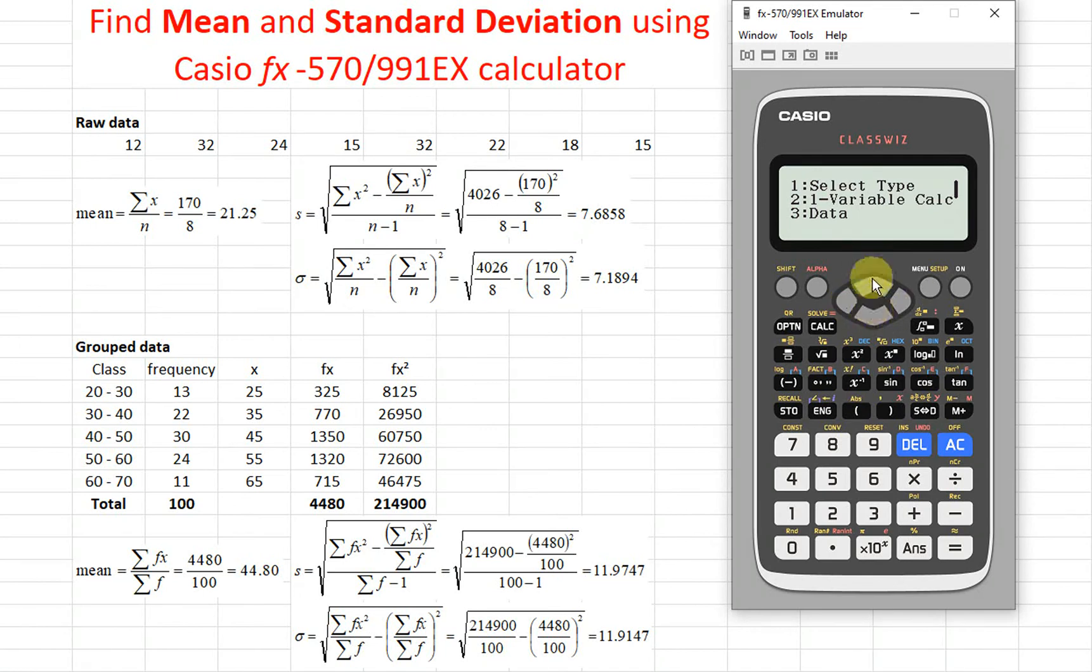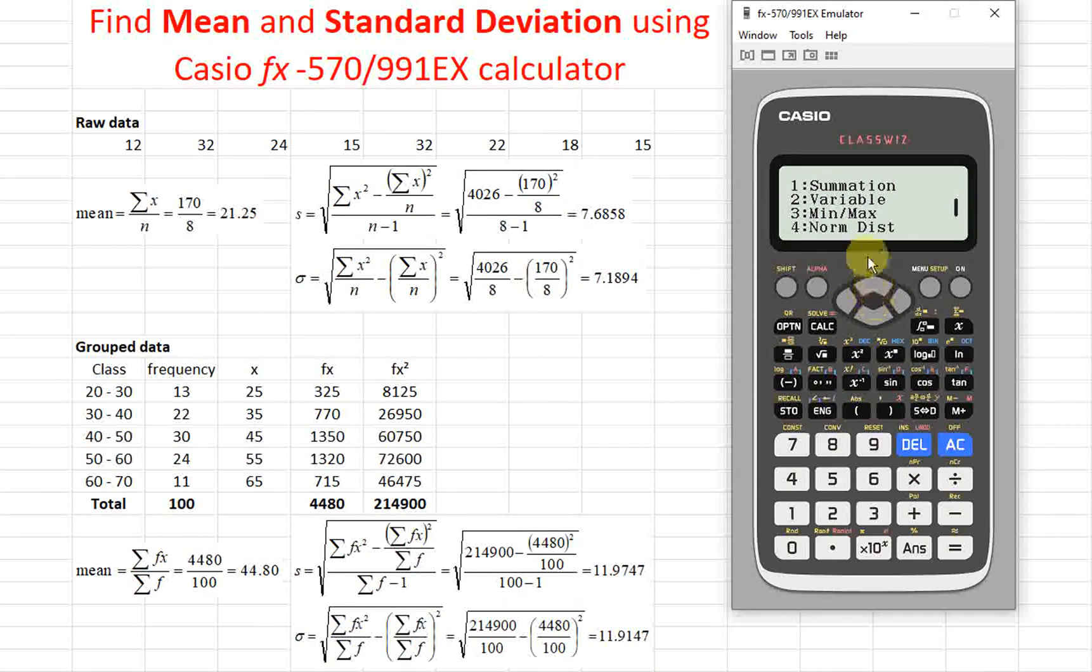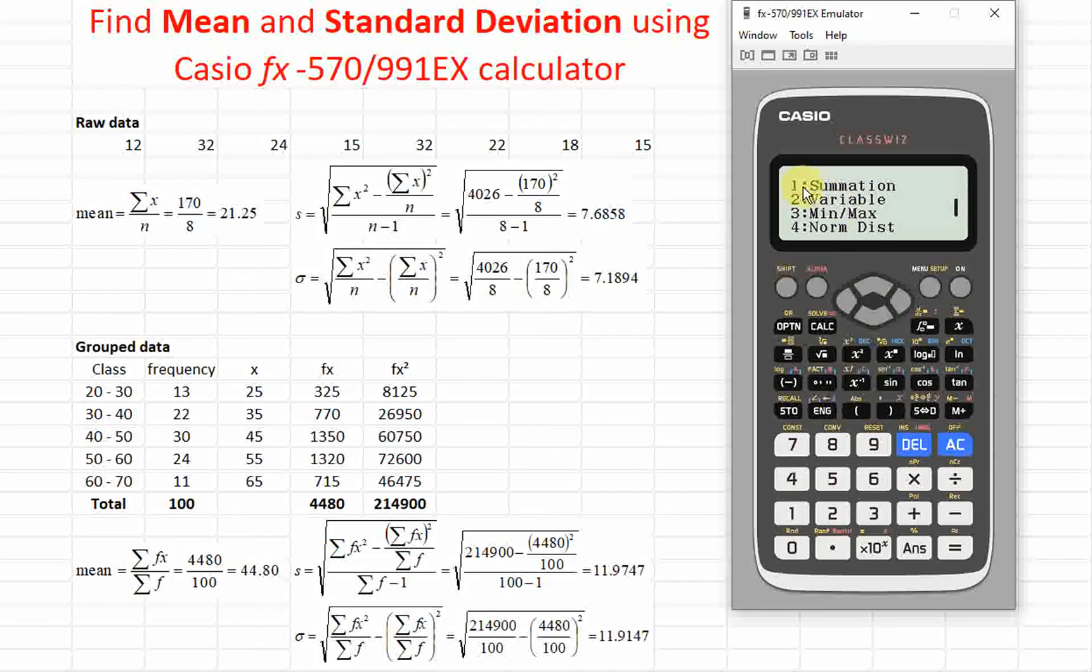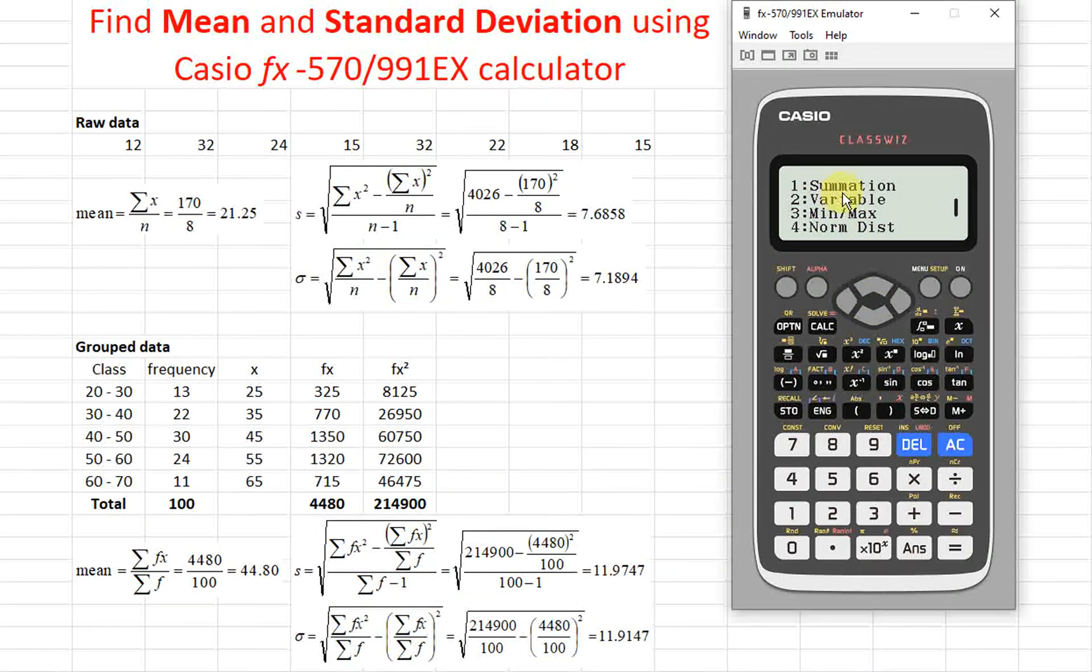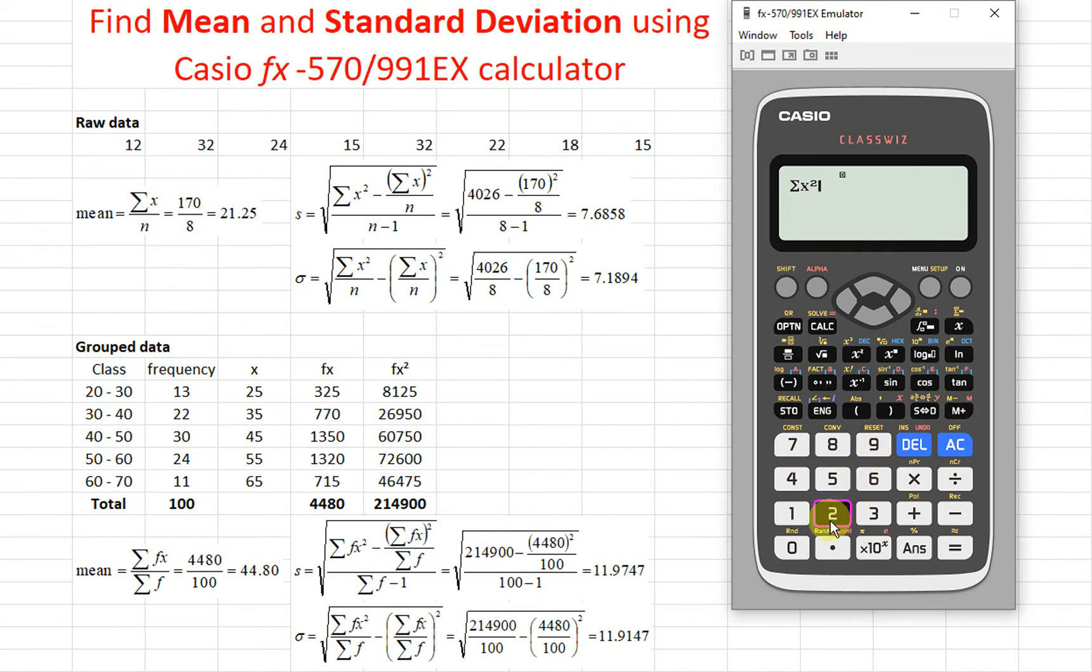So if let's say we want to call a particular value for calculation purpose, so we just have to press accordingly. So press summation, then we will have the summation. So 214900.